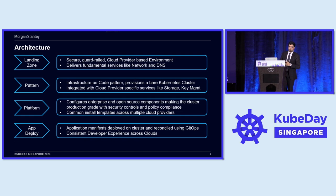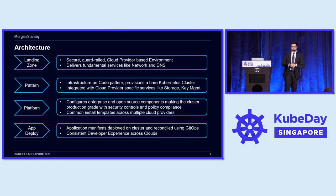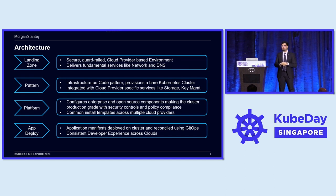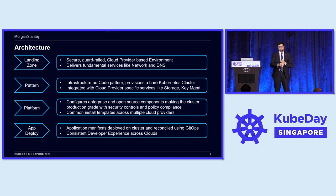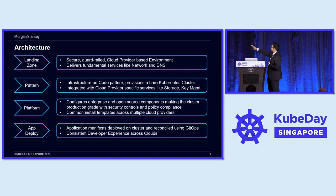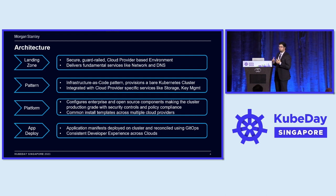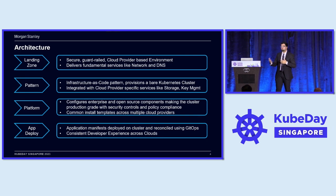I'm going to walk you through the four parts of how we are solving this. The first aspect involves building out what we call landing zones. The landing zones are nothing but a secure guardrail, cloud provider-based environment where your Kubernetes clusters get built into. The landing zone only provides fundamental services like networking and DNS — think of it like your Azure subscriptions, AWS accounts, or Google projects. That's just the base foundation where your clusters will get built into.